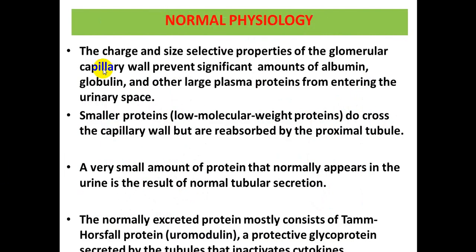Normal physiology: The charge and size-selective properties of the glomerular capillary wall prevent significant amounts of albumin, globulin, and other large plasma proteins from entering the urinary space. However, smaller proteins — i.e., low molecular weight proteins — will cross the capillary wall and enter the urinary space.